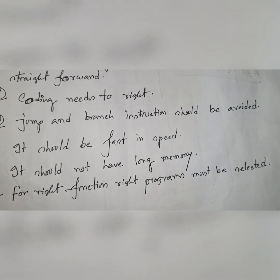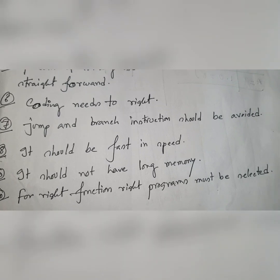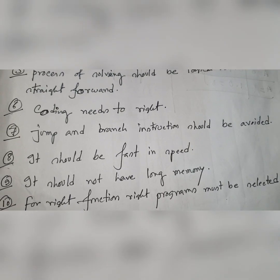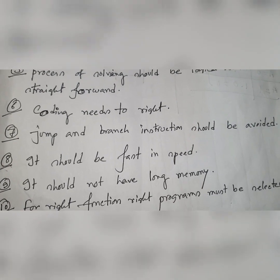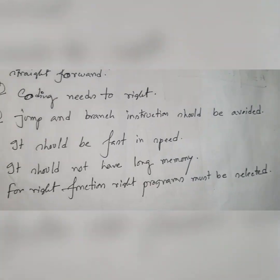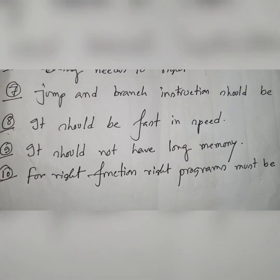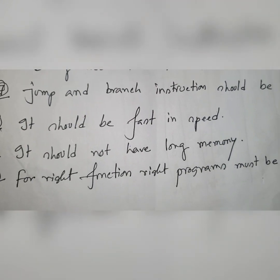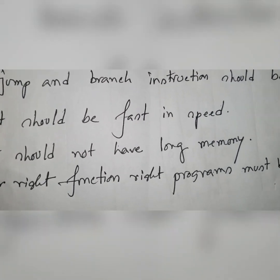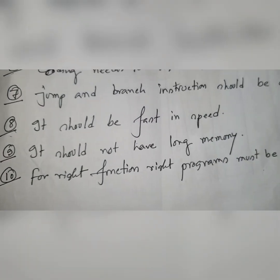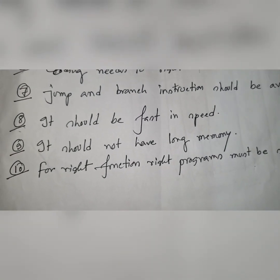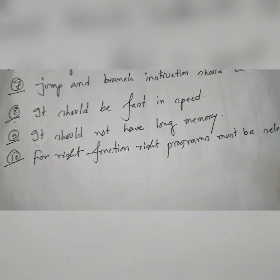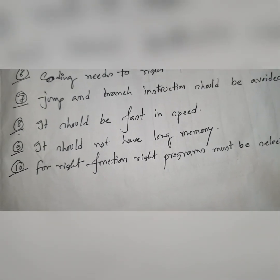Number eight, the program should be fast in speed. The program you write should be calculated for speed — it must be fast. Number nine, it should not have long memory usage. When you are writing a program, you must be conscious of memory. In a small program, if you use a large amount of memory, that is a waste of memory.